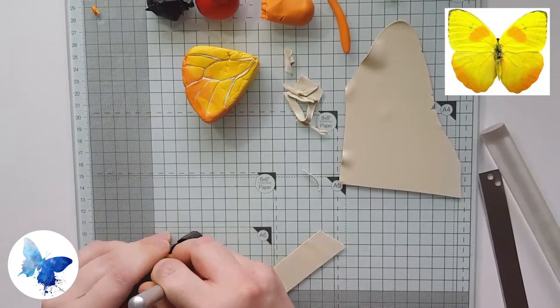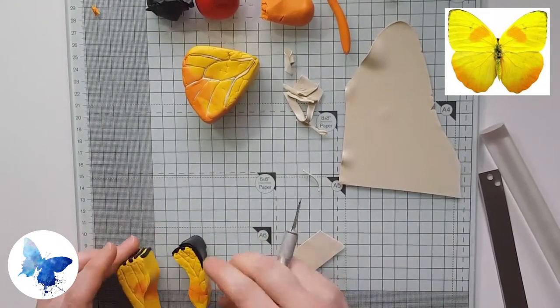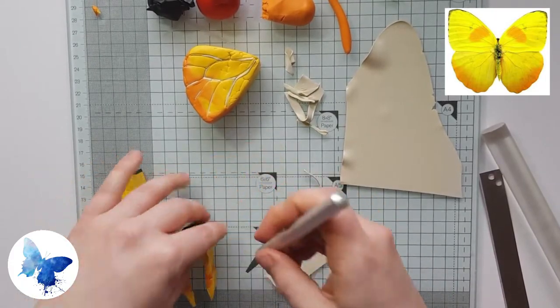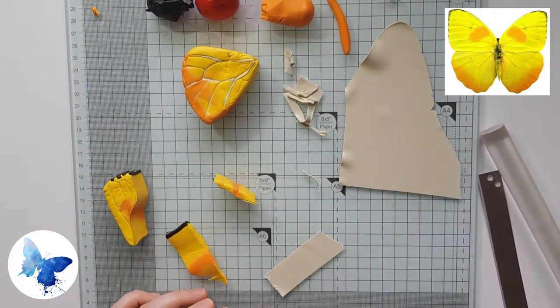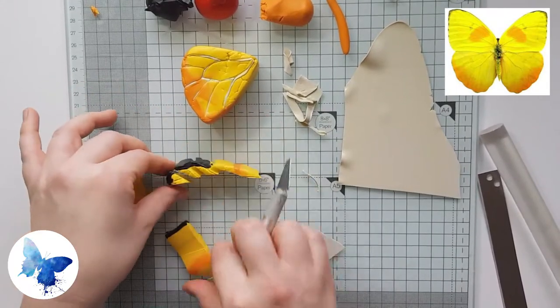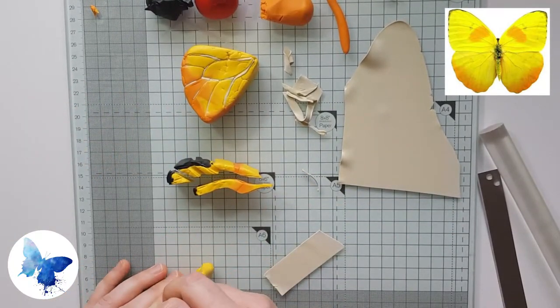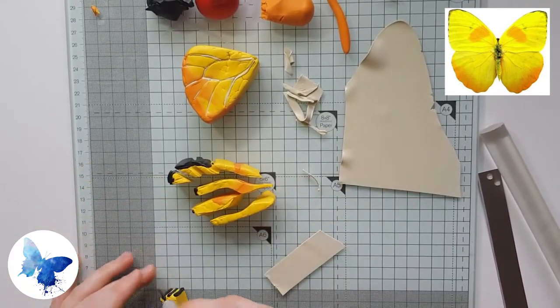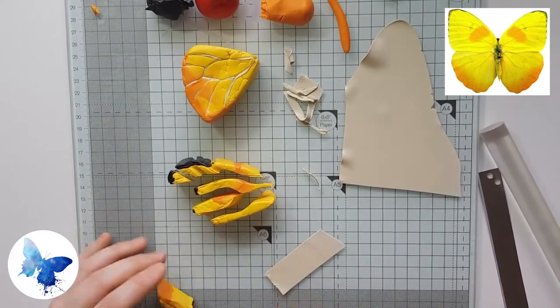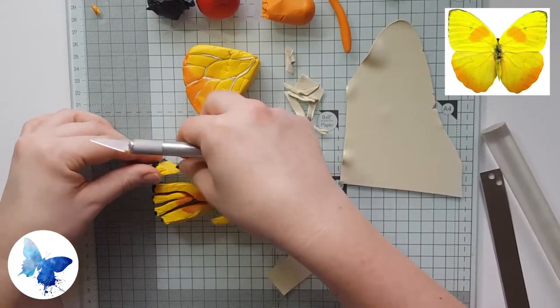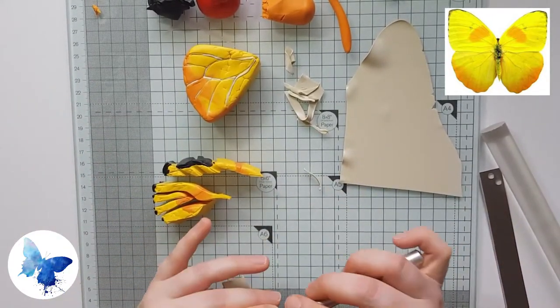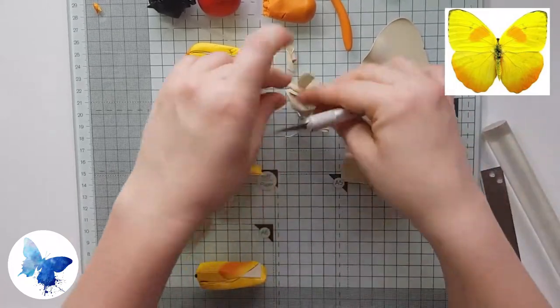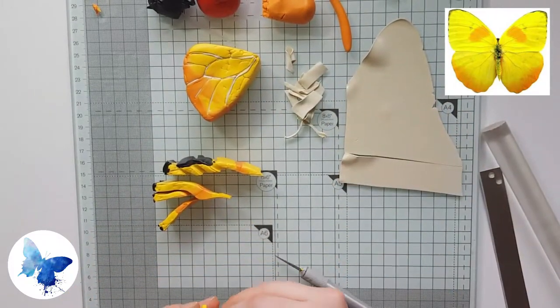Take your time with the top wing, it's really fiddly because there are so many little pieces in this particular butterfly. It has so many veins that are on show so just take your time and put it together really carefully.